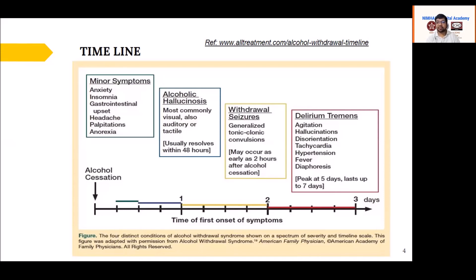Finally, delirium tremens occurs between 48 to 72 hours — maximum 96 hours — after stopping alcohol. As the name suggests, there will be delirium and tremens, meaning severe agitation. Understanding this timeline is critical: if a patient's last alcohol intake was 15 days ago, tremor is unlikely to be from alcohol withdrawal. Similarly, someone who stopped 2 months ago presenting with a seizure should not be attributed to alcohol withdrawal.